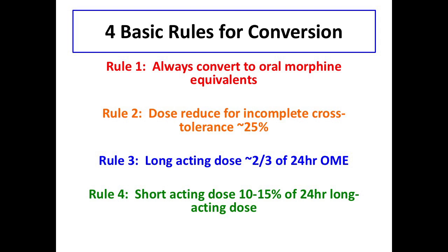Now that we've reviewed the principles of opioid conversion, let's apply this information to a few cases. Remember these four basic rules: Rule one, convert all opioids to 24-hour oral morphine equivalents. Rule two, decrease the 24-hour total by 25% to account for incomplete cross-tolerance when rotating opioids. Rule three, two-thirds of your total 24-hour OME should be long-acting. Rule four, 10–15% of your long-acting dose will be your short-acting dose, given every three hours on an as-needed basis.